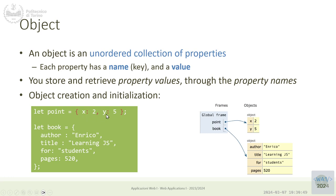The property names may be any string. The values also may be of any type. In this example we have an object with four properties: author, title, and pages — three are strings and the fourth is a number. Note that a trailing comma after the last element is tolerated by the language. It's very convenient to have that comma because if you add a new property you don't have to adjust the commas manually.